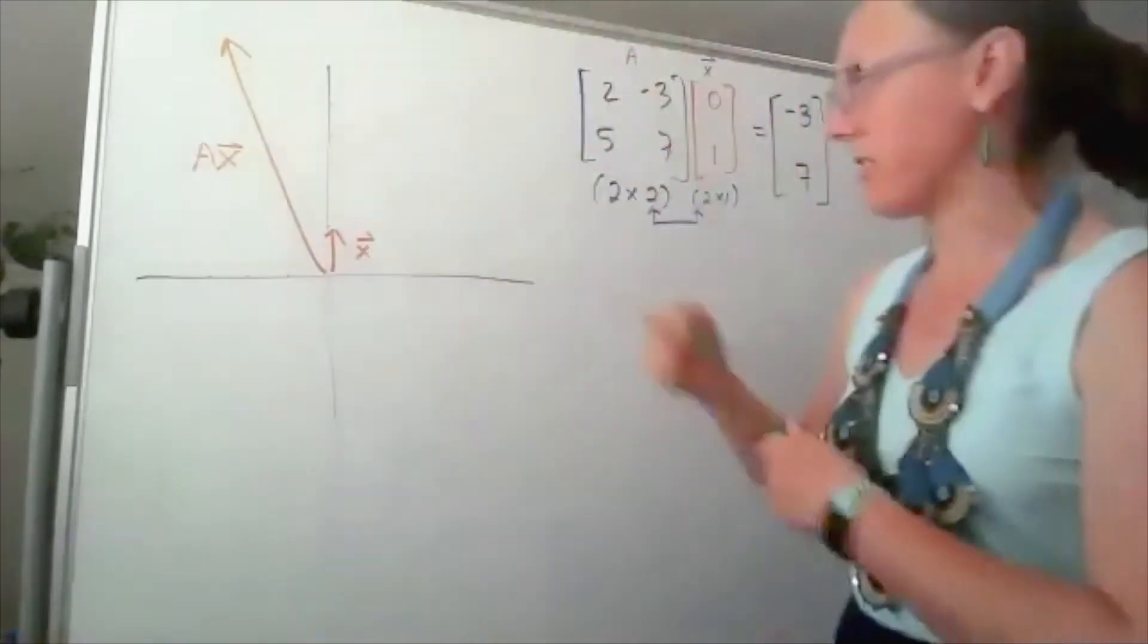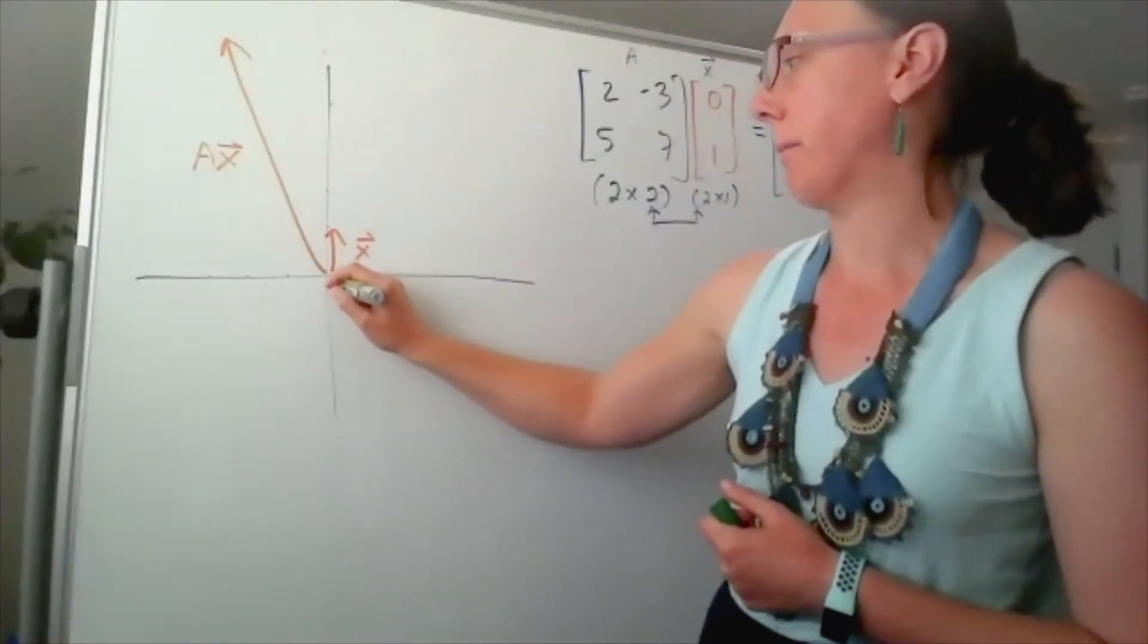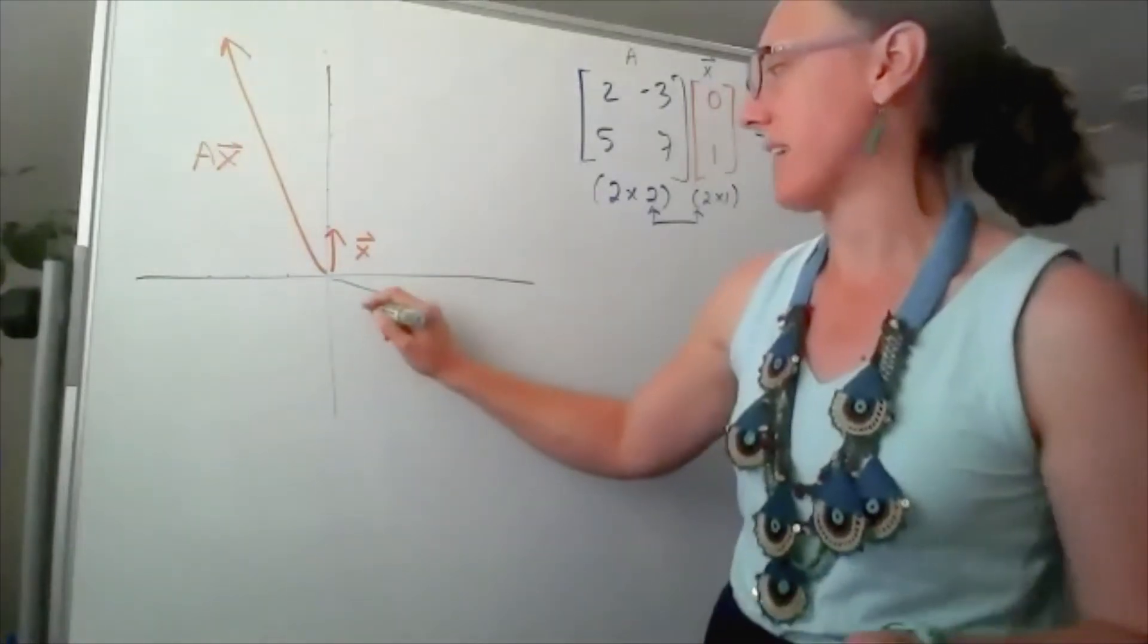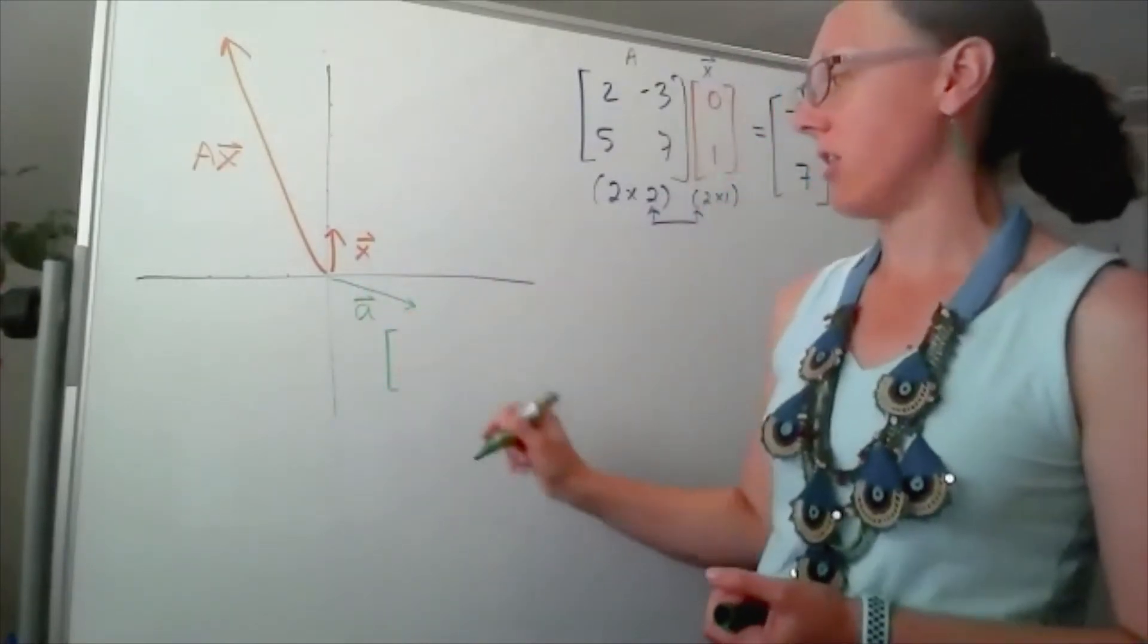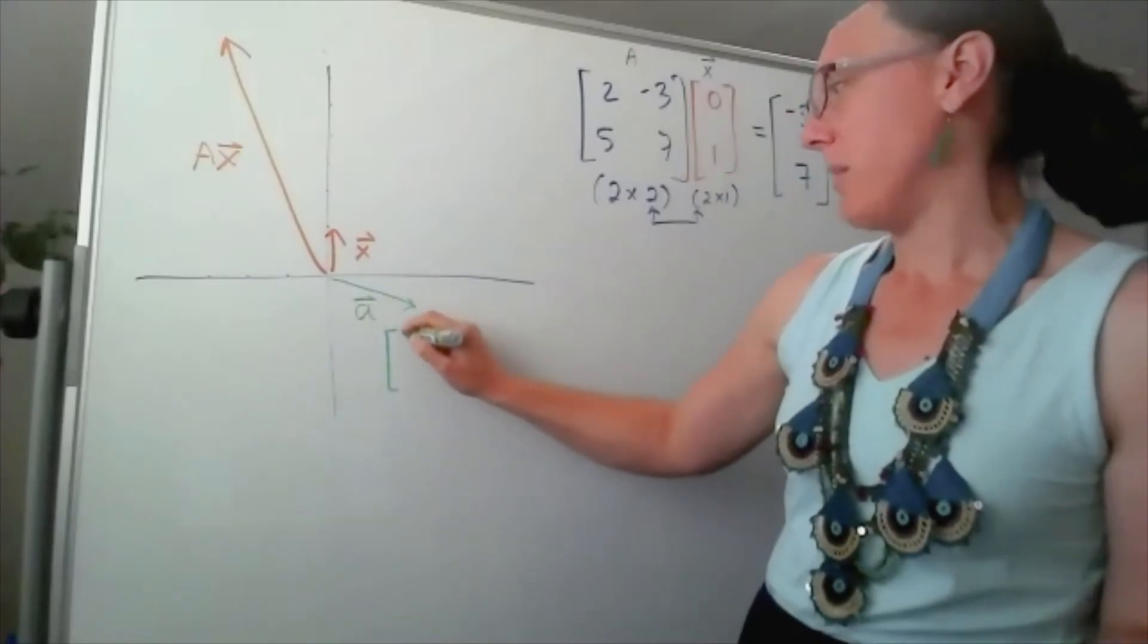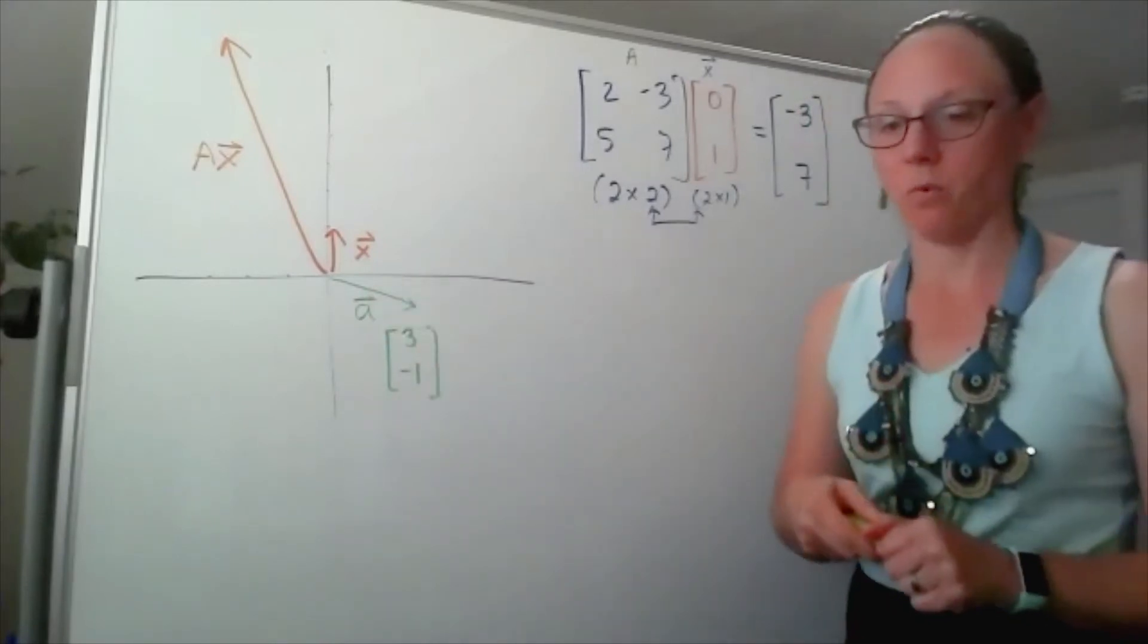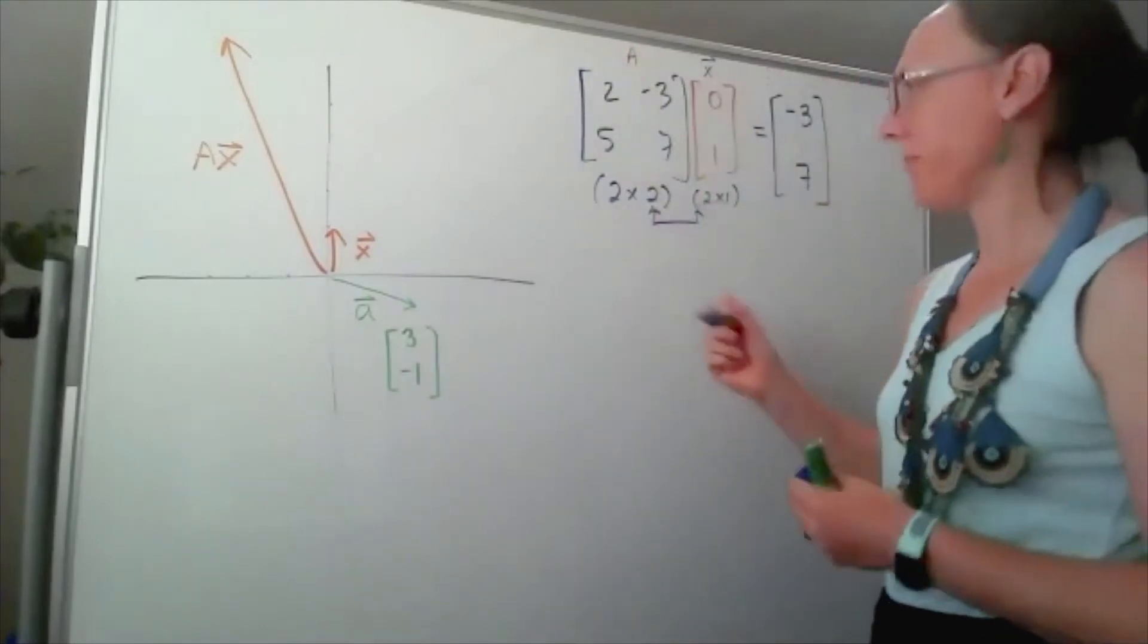So if I pick another vector, let's say I started with the vector, that was x, I'll call this a. And let's say that a vector as a column vector, it looks to me like that's about maybe 3 to the right and down 1. So that a vector is going to be 3, negative 1, and if I want to know what the transformation is...